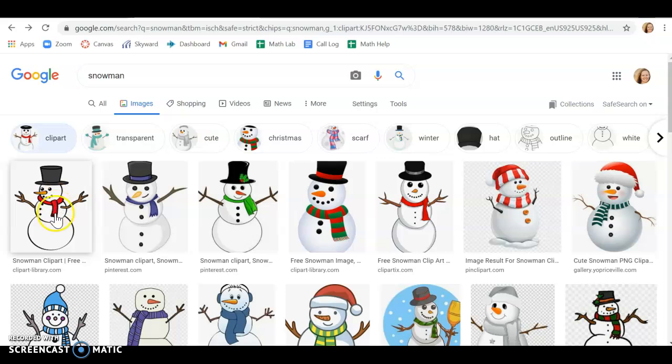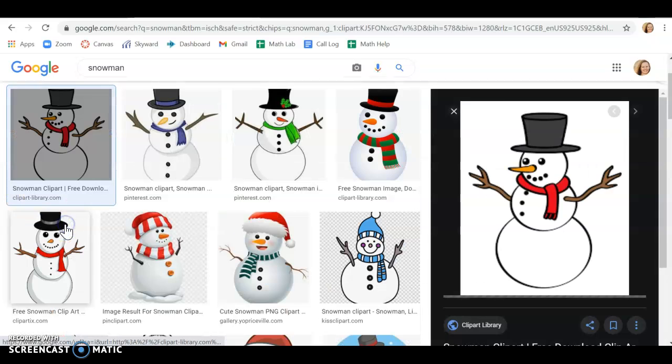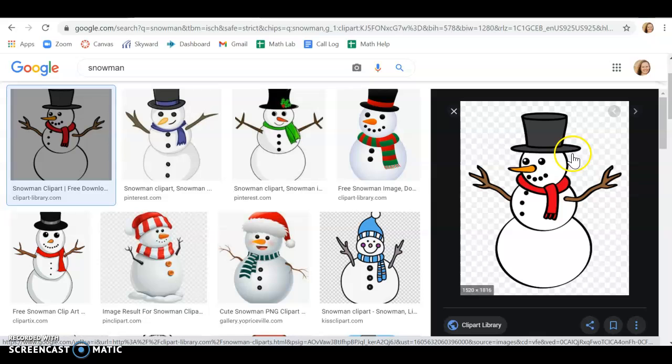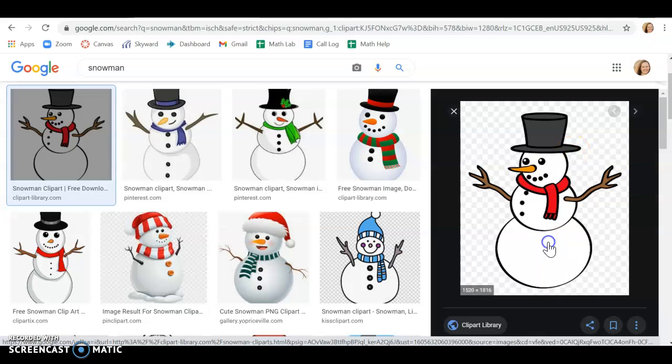So I'm going to choose this first snowman because I like his body has got the curves. He's got a scarf on which kind of looks like a quadratic. He's got the straight arms. So I'll just choose this guy. All I'm going to do is I'm just going to save him to my desktop.